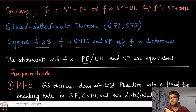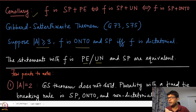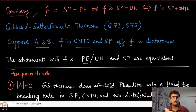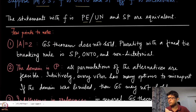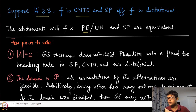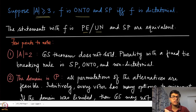Before moving on to the proof, let us look at some points we can note from this statement — which implications are and are not implied by the Gibbard-Satterthwaite theorem. The first observation is that the number of alternatives needs to be at least three or more.